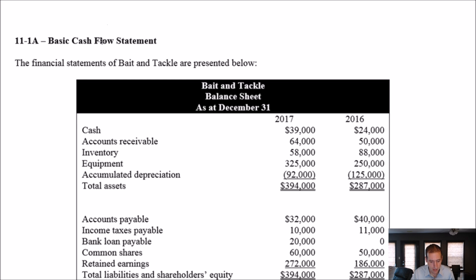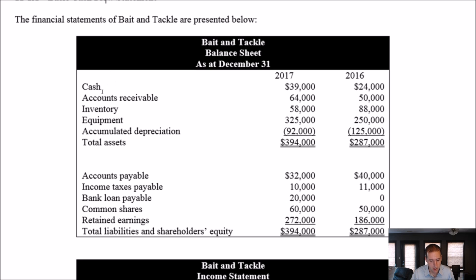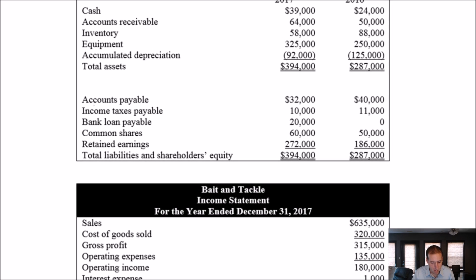Nothing in here is particularly scary. Cash, AR, inventory, equipment, accumulated depreciation on that equipment — all assets we would expect almost every retail company to have. Accounts payable, income tax payable — that's where we filed our taxes and haven't paid them yet. They've also got a bank loan, common shares, and retained earnings. Income tax payable is the only thing that kind of jumps out a little bit.